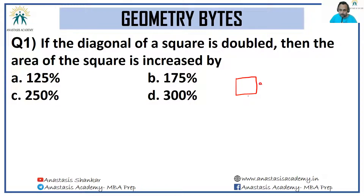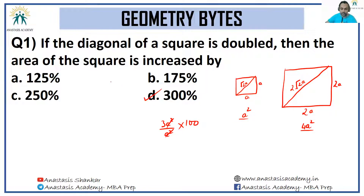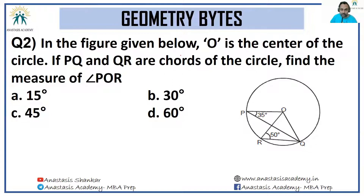If the side is 'a', the diagonal is root 2a. If the diagonal is doubled to 2 root 2a, the new side becomes 2a. Area in the first case is a squared; area in the second case is 4a squared. The increase is 3a squared from a squared — in percentage terms, the final answer is 300 percent.